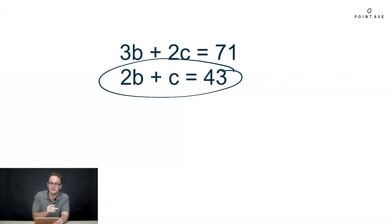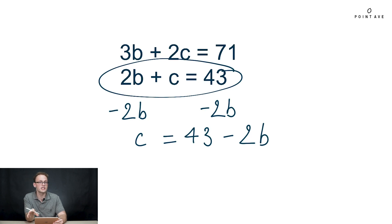We can start by solving for a variable in either equation. In this case we're going to start with the second one, but we could have done the other one as well. To solve it's pretty simple. We subtract 2B from either side. We get C equals 43 minus 2B. And so now we have our expression which is equal to C.